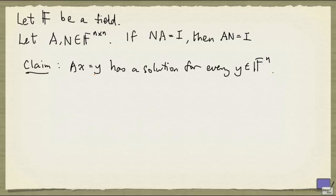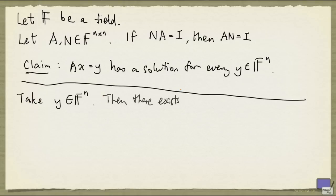So let's see how we can use this claim to prove our result. Take an arbitrary element y from F^n. Then this claim tells us that there exists x' in F^n such that Ax' is equal to y.